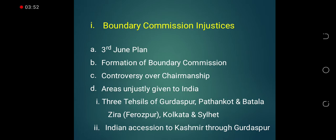Three tehsils of the Gurdaspur district — that is, Gurdaspur itself, Pathankot and Batala — and Zira from the Ferozpur district were handed over to India. In the Bengal area, Kolkata was handed over to India, and some parts of Sylhet, Murshidabad, Nadia, etc., which were Muslim majority areas, were unjustly handed over to India.